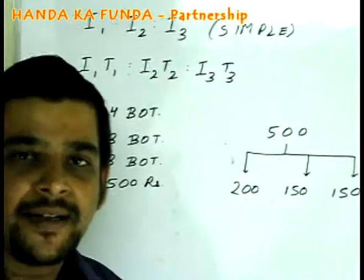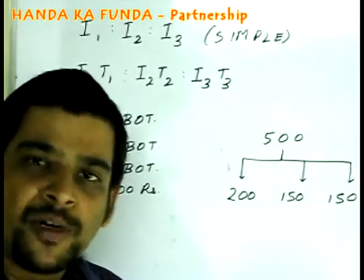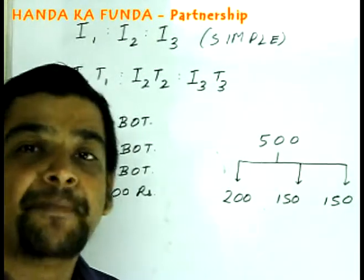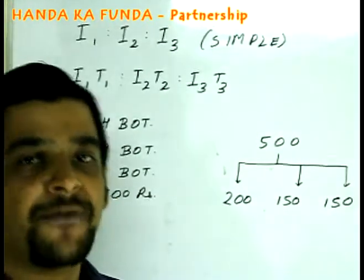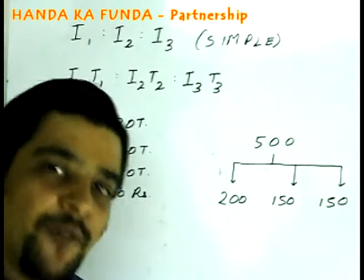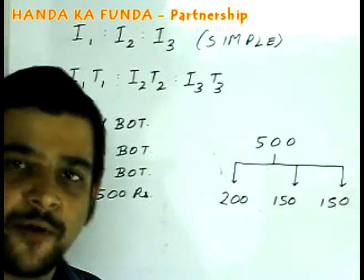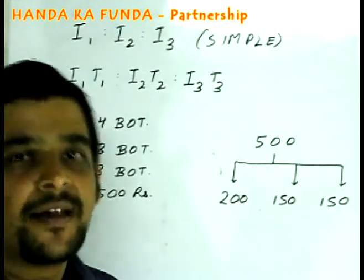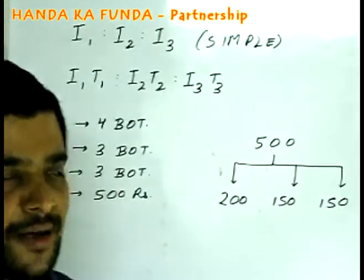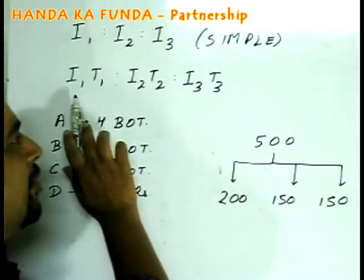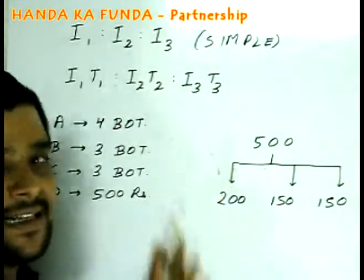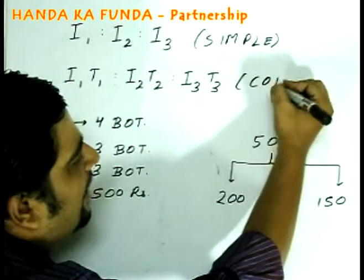The other case, which is very popular, is one in which partners differ not only in the amount of money they invest but also in the time period for which they have invested. If A invests I1 for T1 time, B invests I2 for T2 time, and C invests I3 for T3 time, then profits or losses are divided in the ratio of I1·T1 : I2·T2 : I3·T3. This is known as compound partnership.